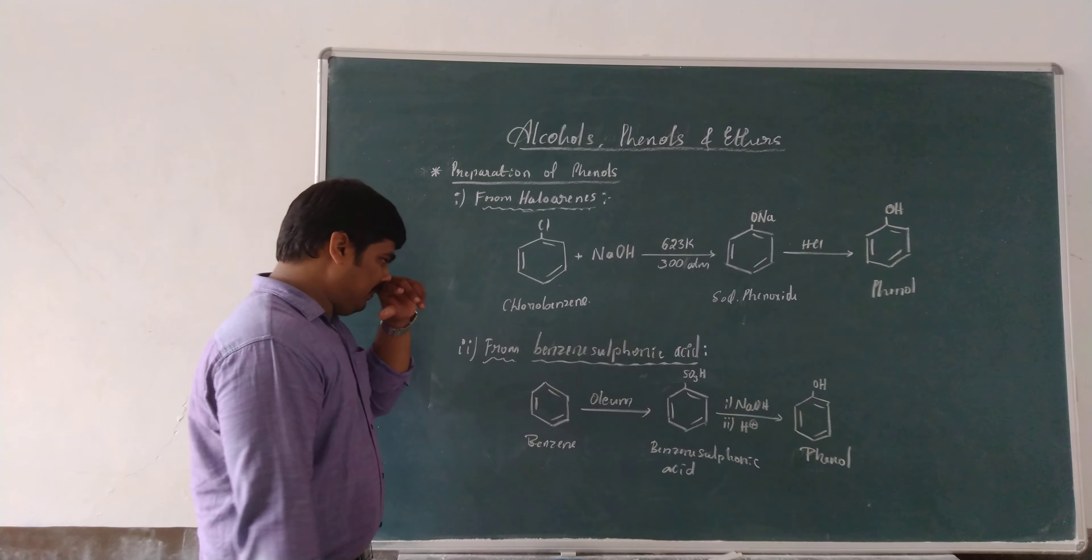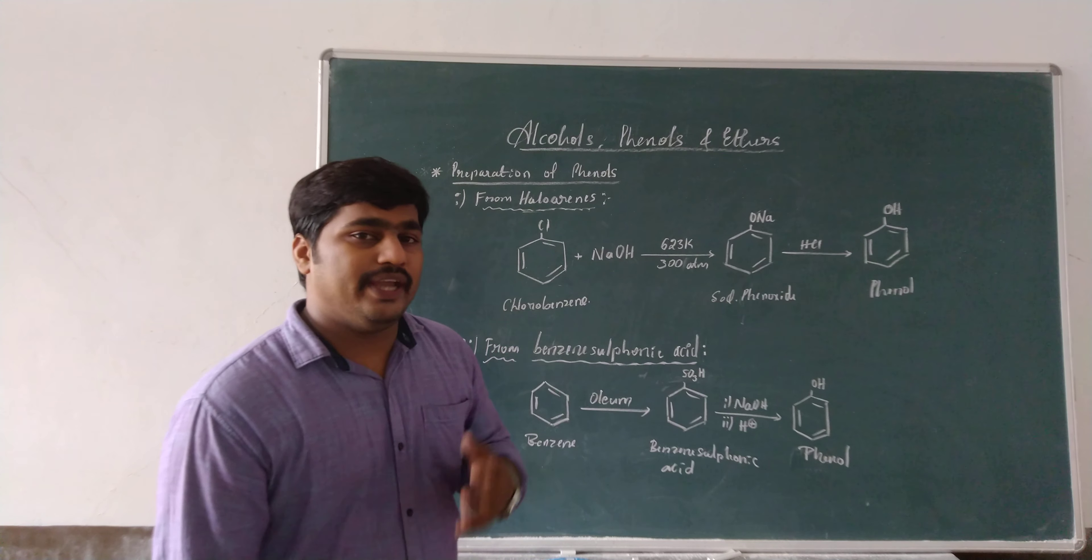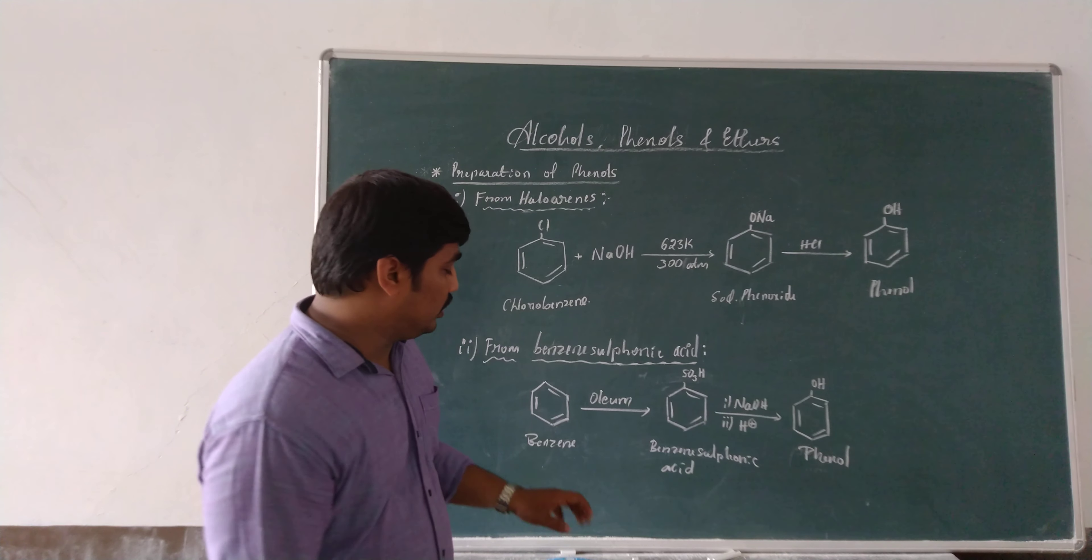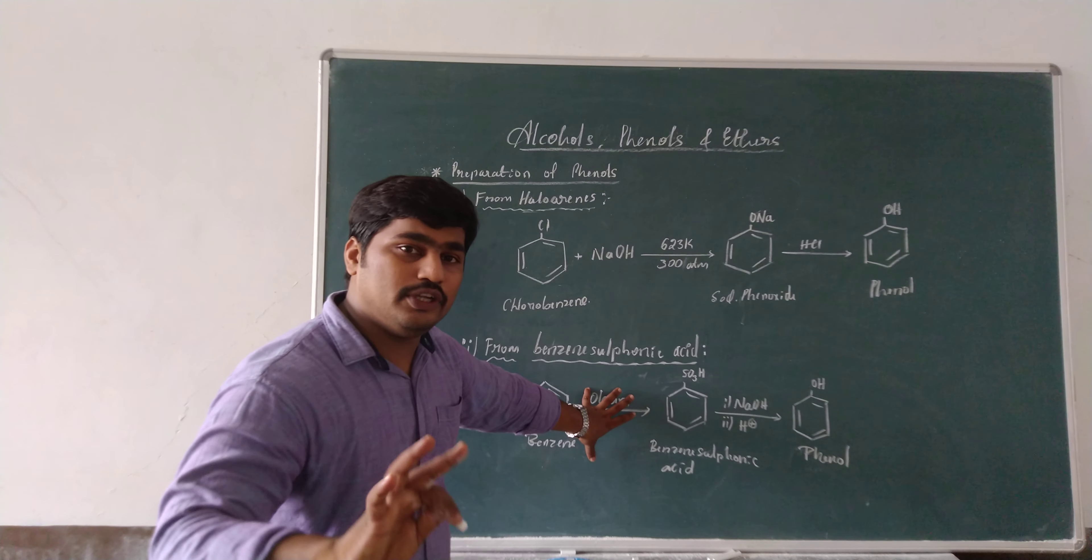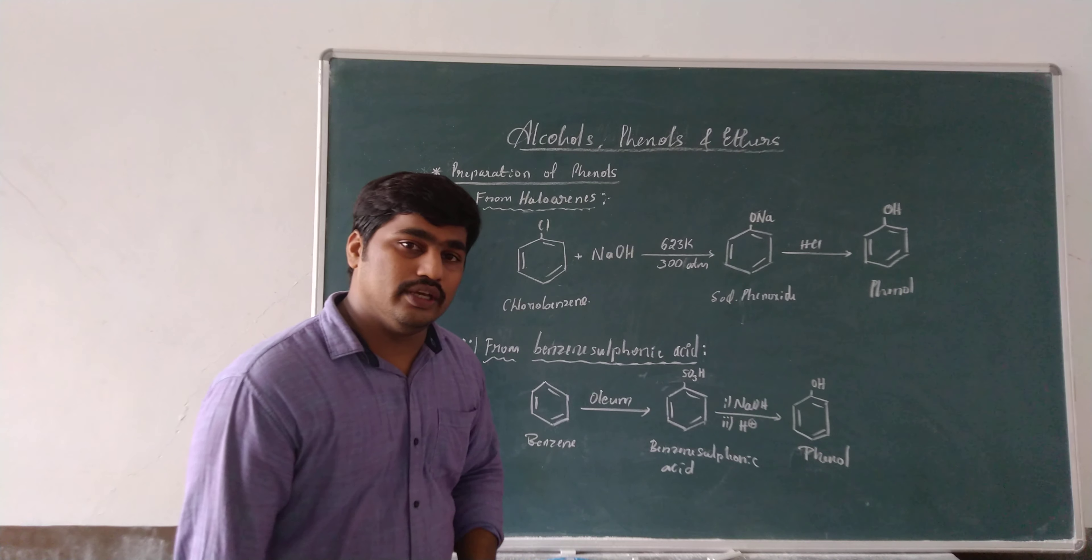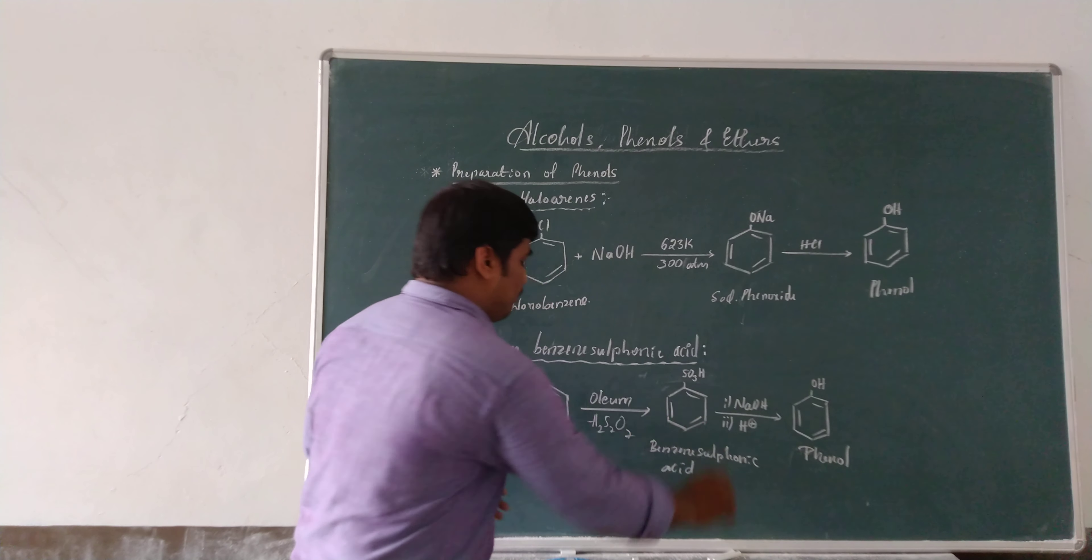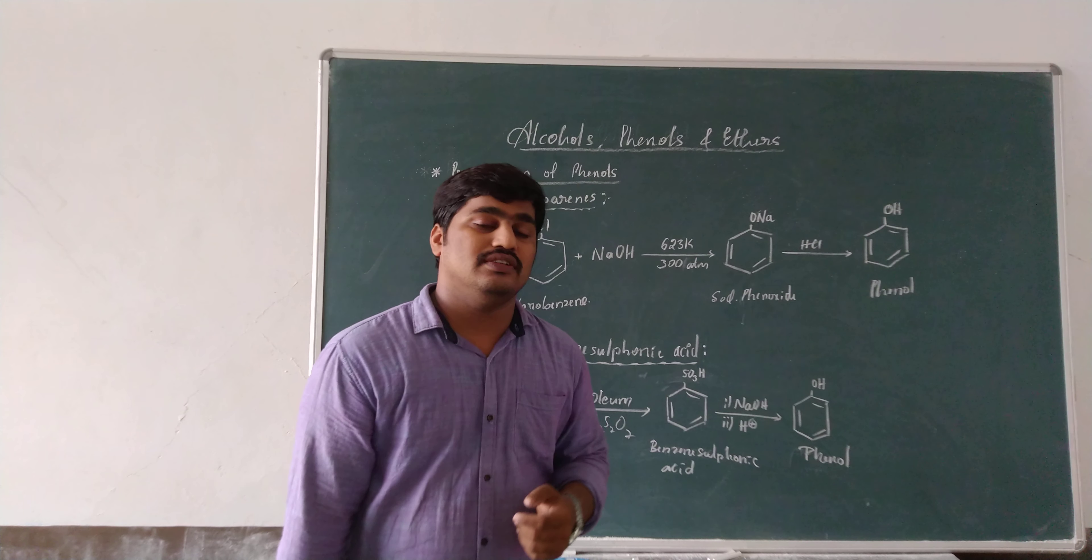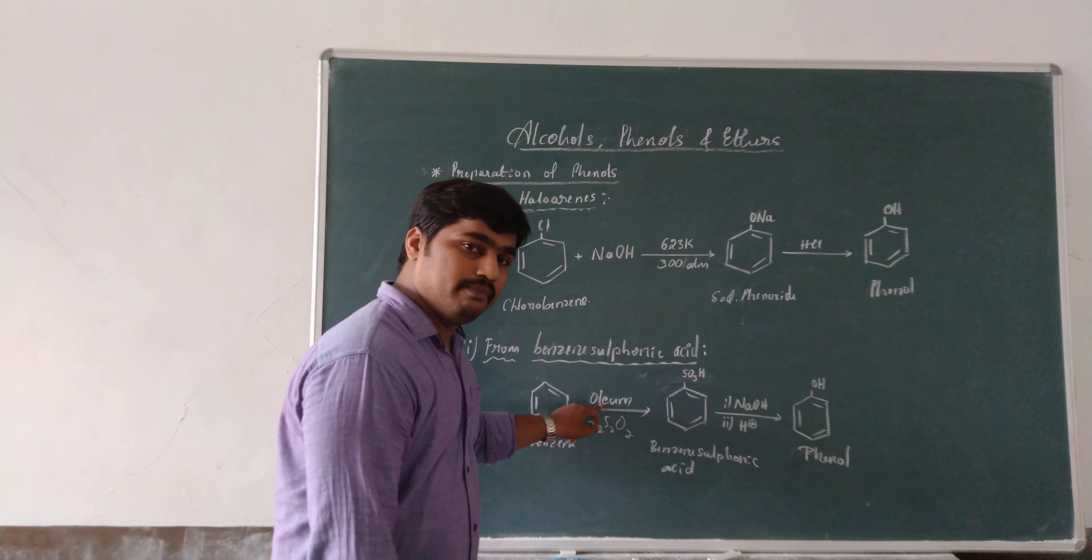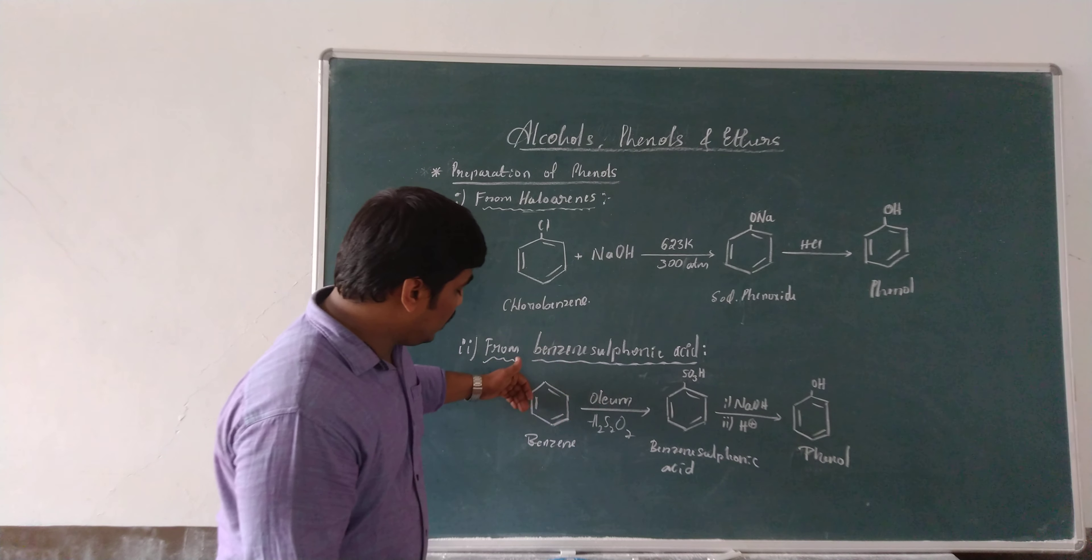Next, second method of preparation is from benzene sulfonic acid. What is benzene sulfonic acid? Benzene sulfonic acid is the product formed during the sulfonation of benzene. How sulfonation of benzene is carried out? The sulfonation of benzene takes place when benzene is treated with oleum. What is oleum? Oleum is fuming sulfuric acid. Oleum is H2S2O7, concentrated H2SO4. The concentrated sulfuric acid is nothing but oleum, more than 60% or around 90% concentrated. This oleum is made to react with benzene.